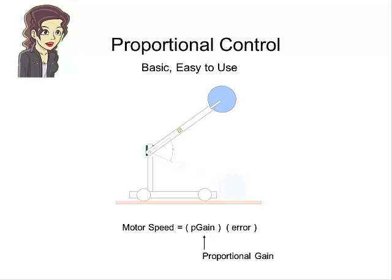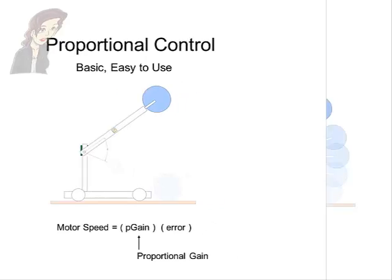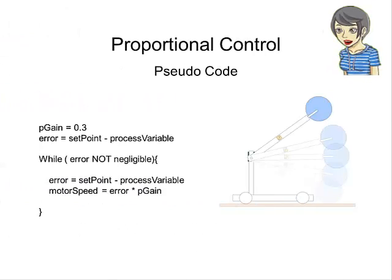In proportional control, you determine the speed of the motor by multiplying the error by a constant called proportional gain, or p-gain. This p-gain is problem dependent, and the process of determining its value is called tuning. We'll talk about tuning later on, but not in this presentation. In this example, using pseudocode, we're setting the p-gain to 0.3, but this is not to say that 0.3 is always the value for p-gain. Again, this number has to be determined by the tuning process.